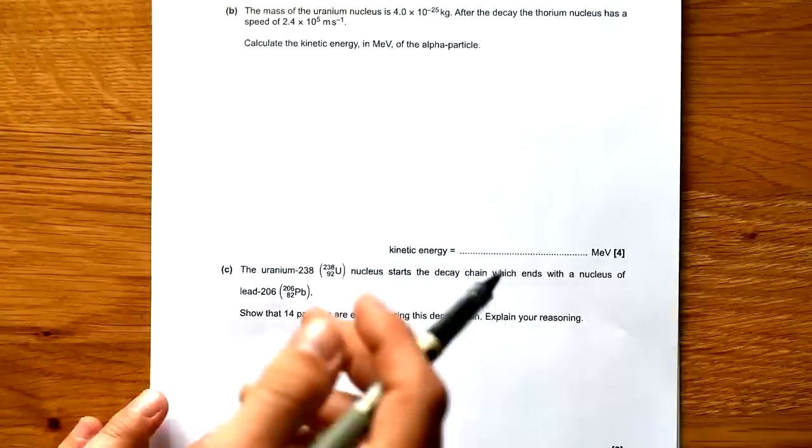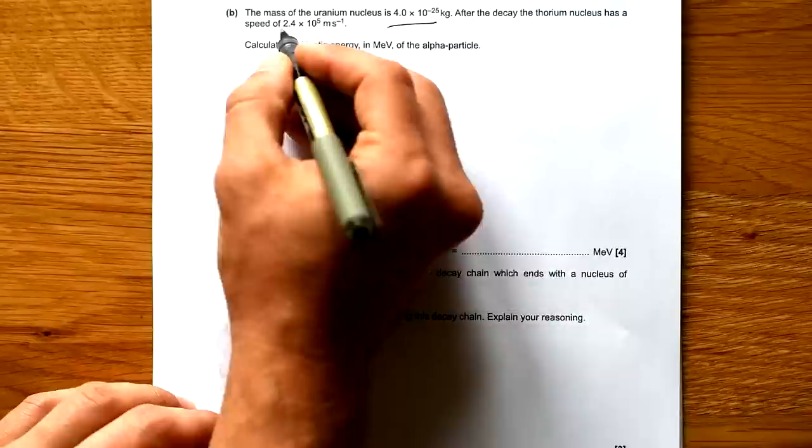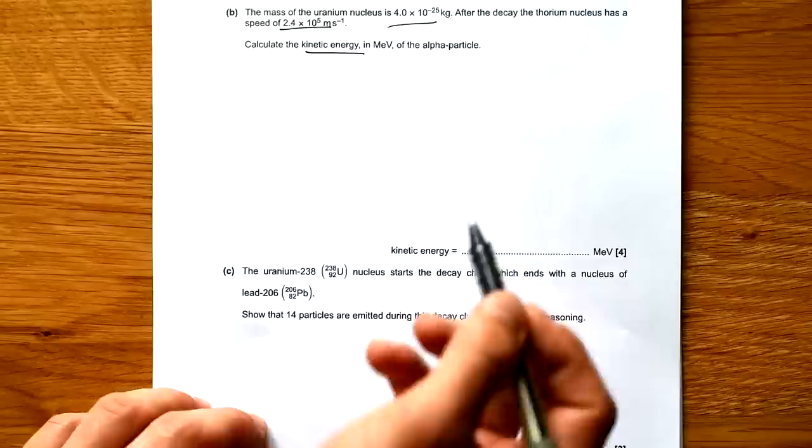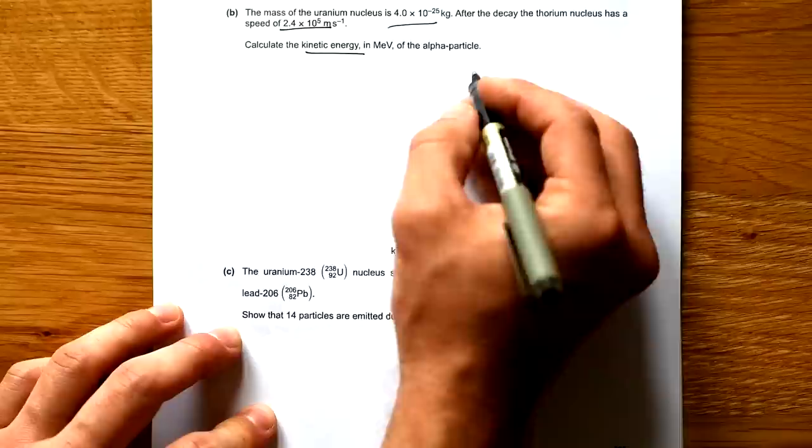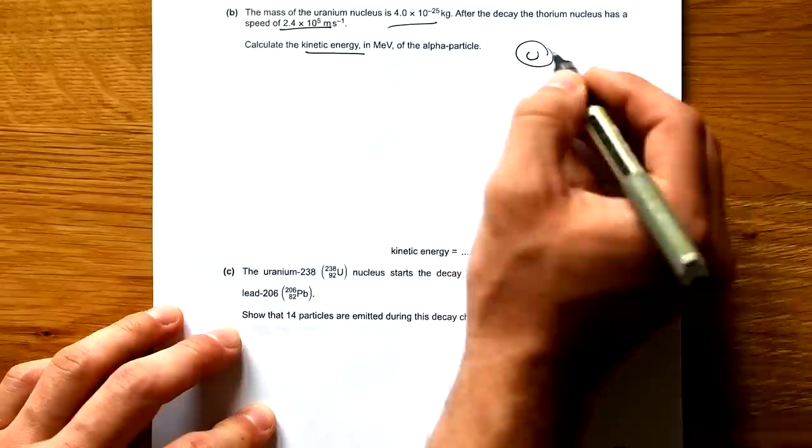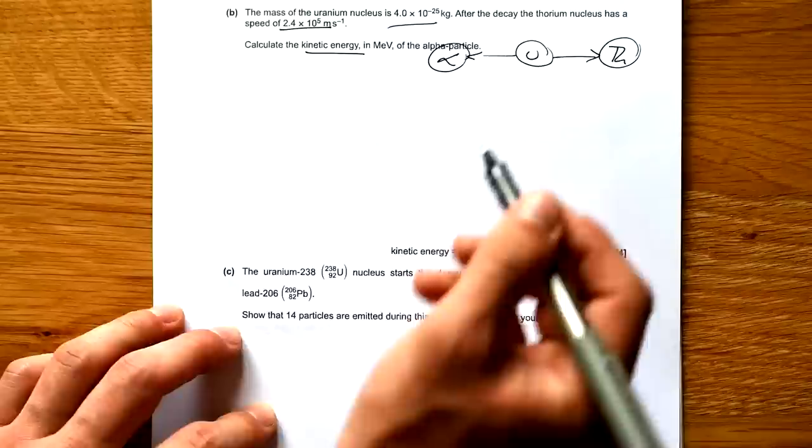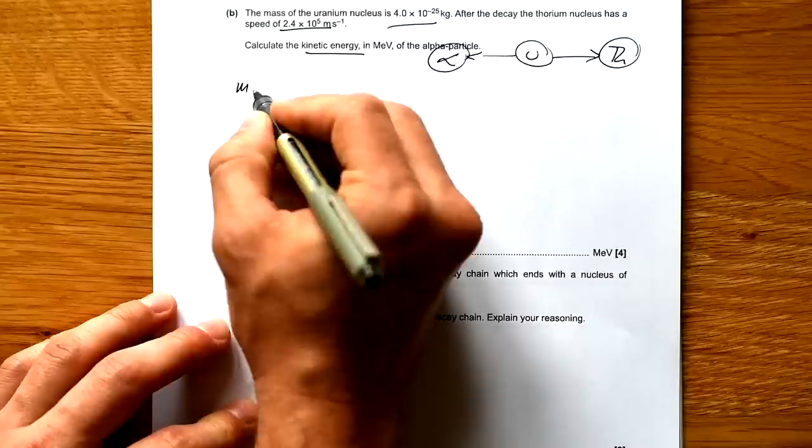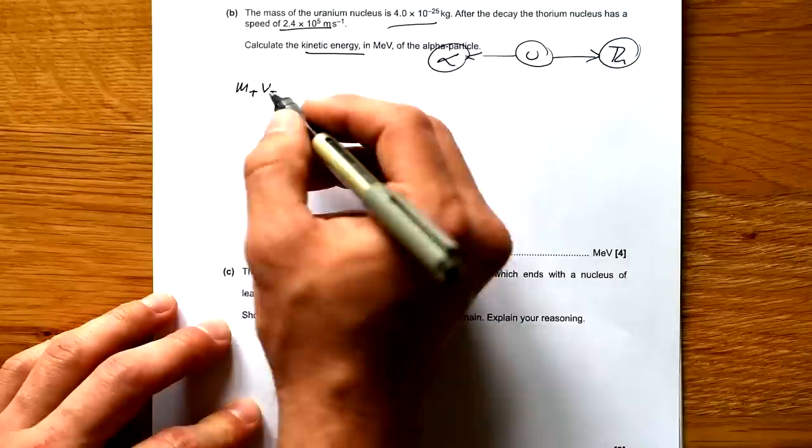Part B: The mass of a uranium nucleus is 4 times 10 to the minus 25 kilograms. After the decay, the thorium nucleus has a speed of 2.4 times 10 to the 5 meters per second. Calculate the kinetic energy of the alpha particle. So you might be wondering what do we do here? But we know that at the beginning, the uranium nucleus was stationary. So if we have a thorium nucleus going off in that direction, we have an alpha particle going off in that direction due to conservation of momentum.